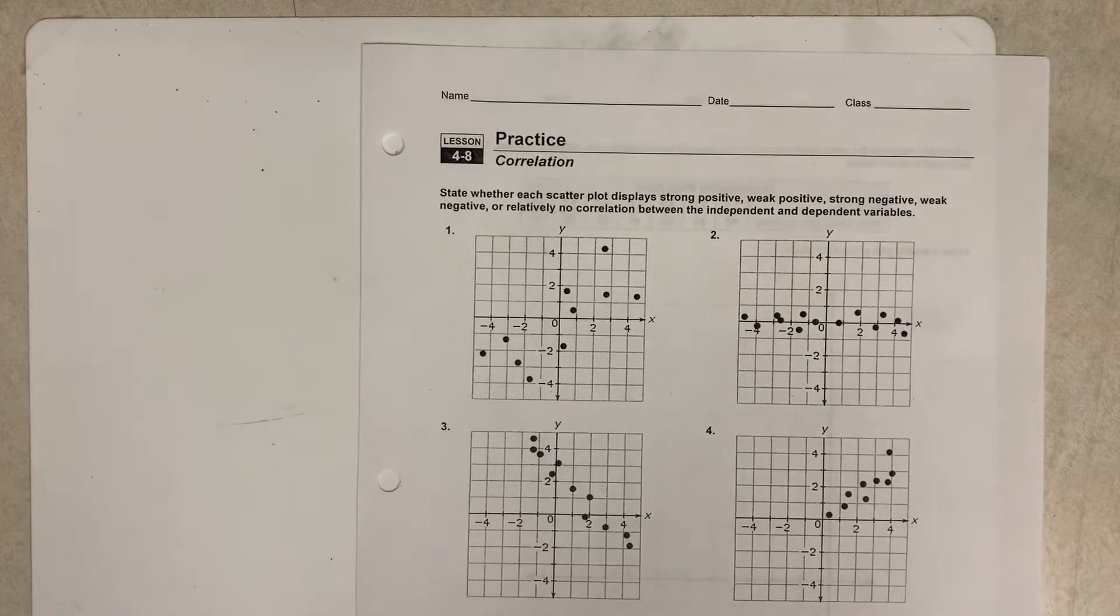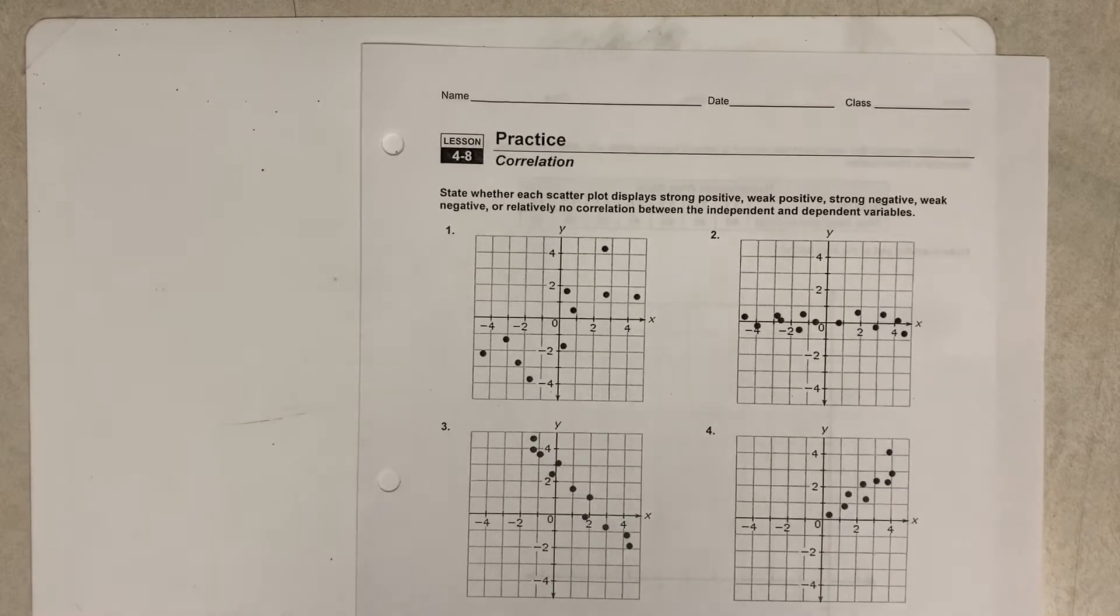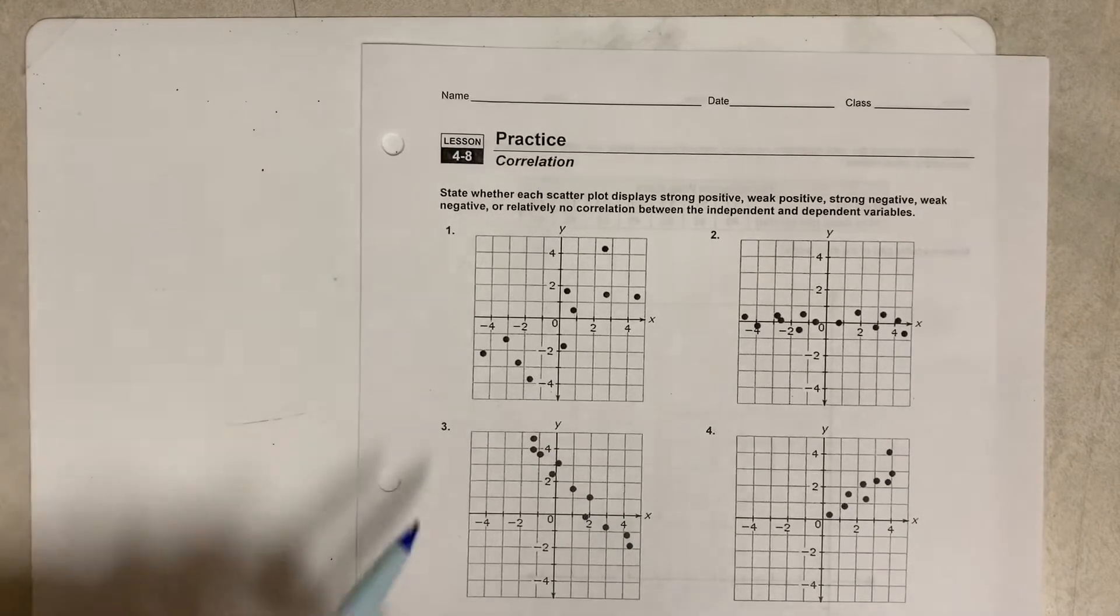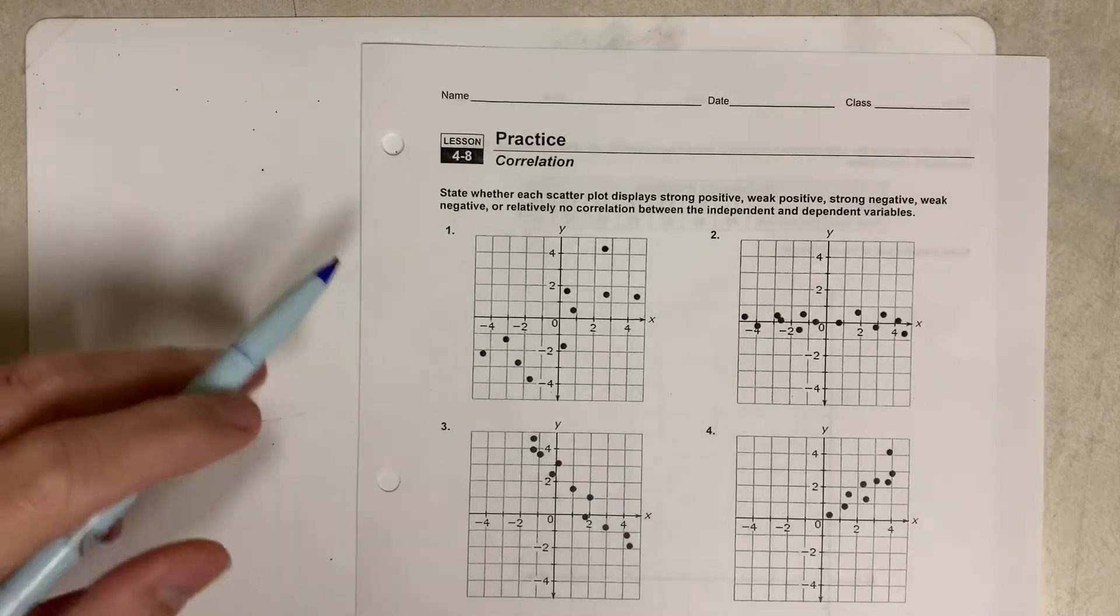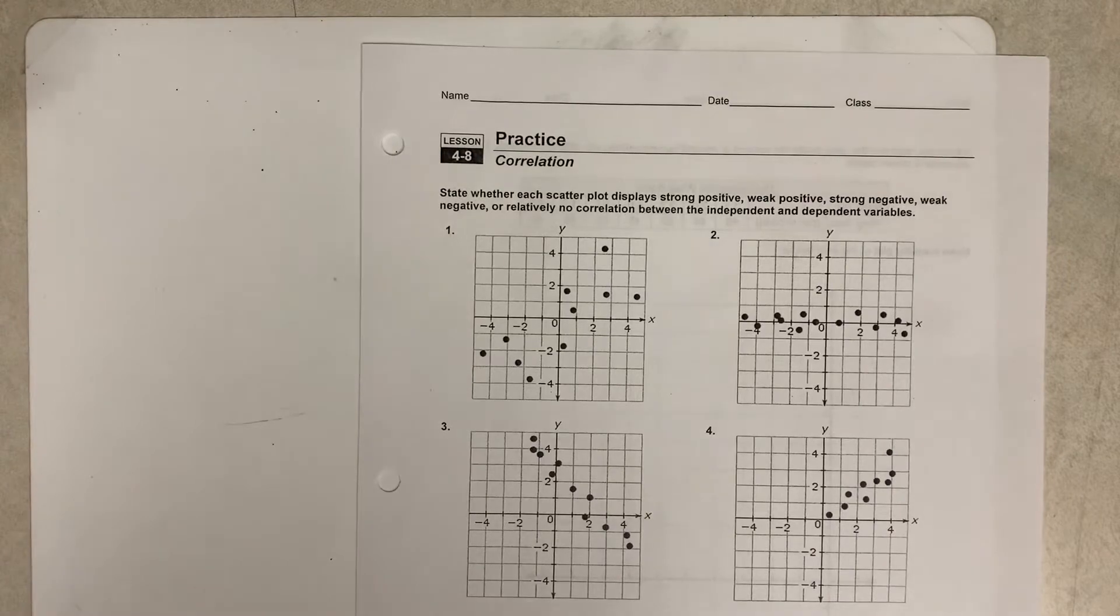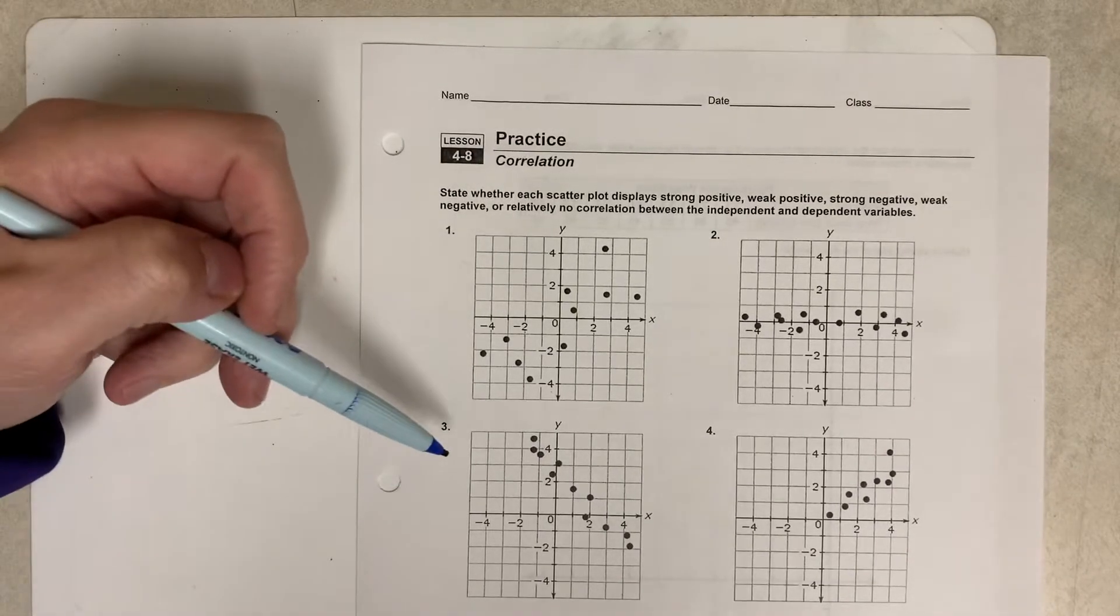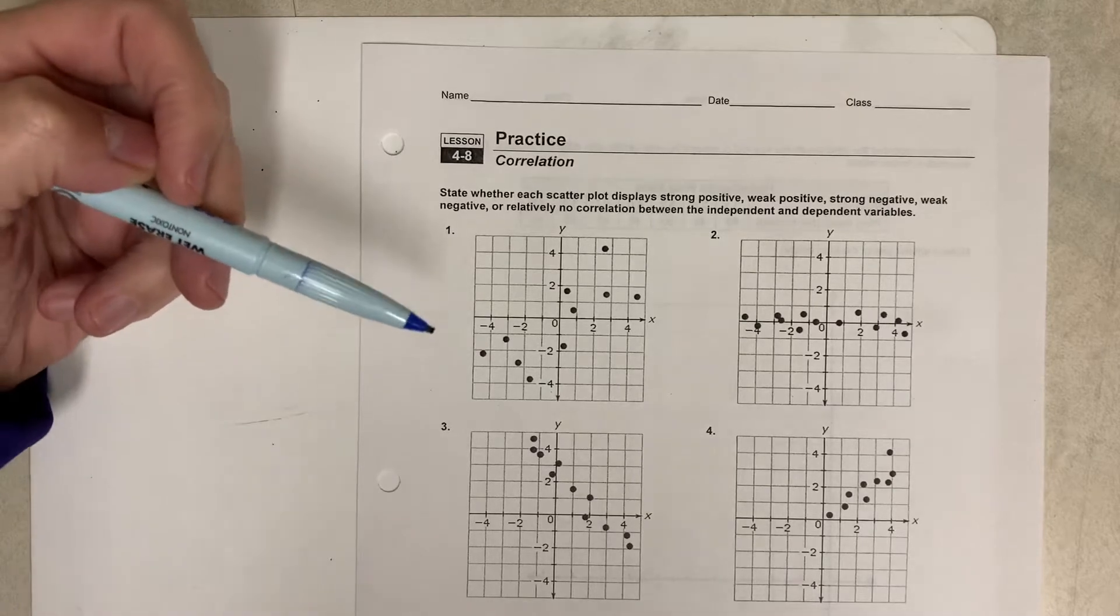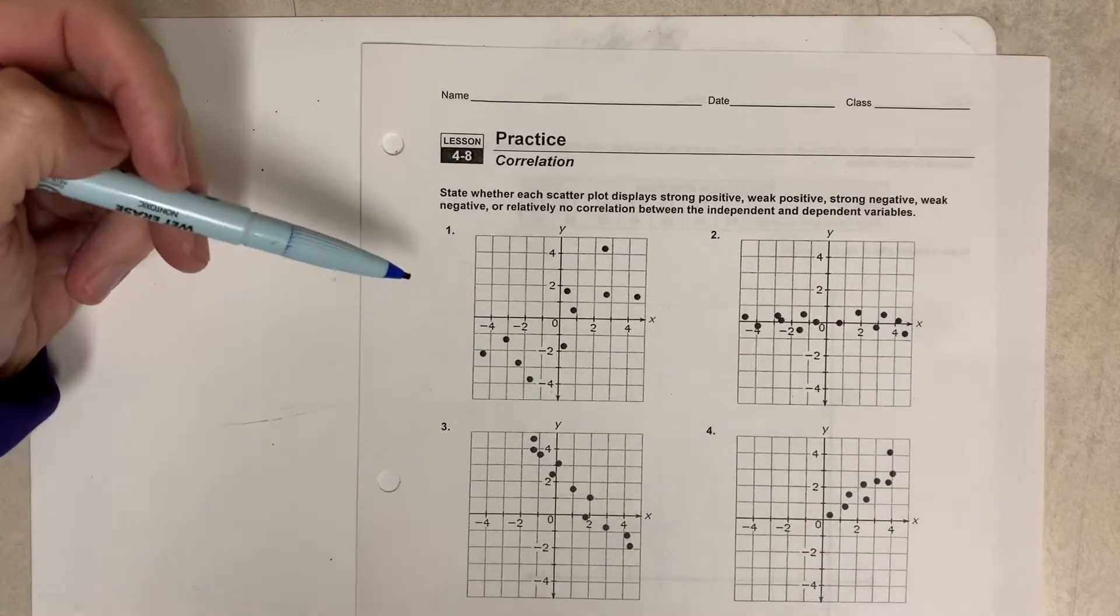So what we do when we look at correlation is we try and see if two sets of data have some relationship with each other—either it's up or down, or sometimes it's none, sometimes it's weak and sometimes it's strong. We're going to look at each of these graphs here, and I know you've probably heard of this before, so this is just going to reinforce a previous lesson.